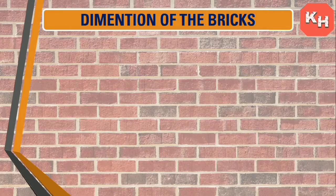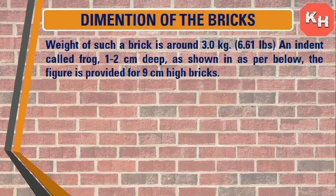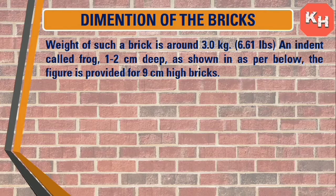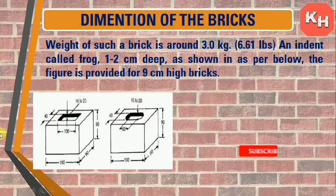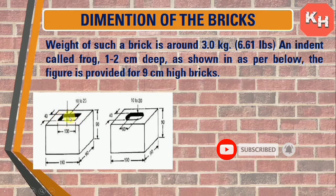The weight of such a brick is around 3 kg. Bricks have an indent called a frog, which is 1 to 2 cm deep, as shown in the figure. For a 9 cm high brick, the frog is used for jointing and for holding mortar.